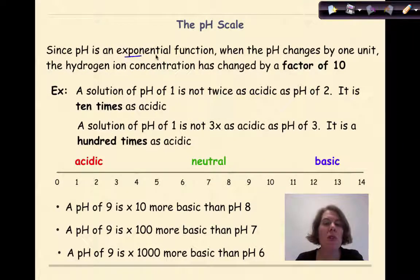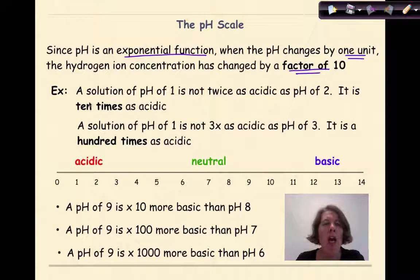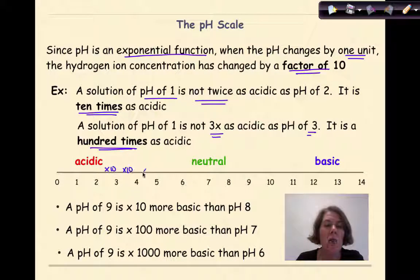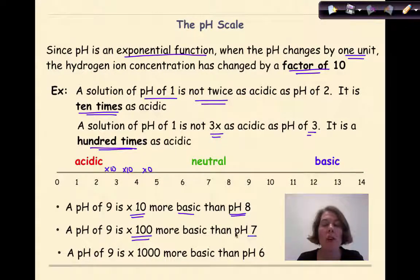Since pH is an exponential function, when the pH changes by one unit, the hydrogen ion concentration has changed by a factor of 10 — we are dealing with a base 10 system. So a solution of pH 1 is not twice as acidic as pH 2, it's 10 times as acidic. A solution of pH 1 is not 3 times as acidic as pH 3, it's 100 times as acidic. A pH of 9 is 10 times more basic than a pH of 8, 100 times more basic than a pH of 7, and 1,000 times more basic than a pH of 6. Never twice something — it's always base 10.